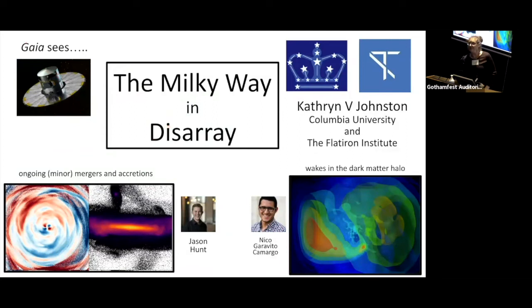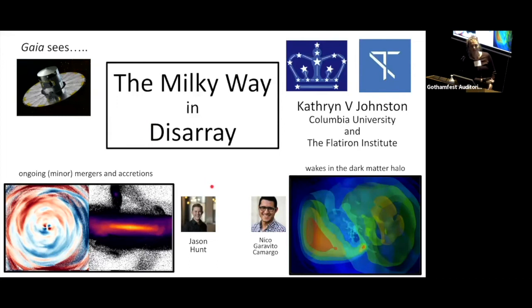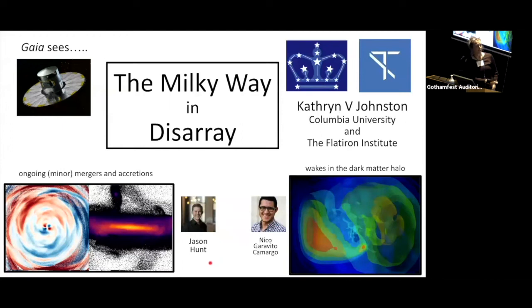For the last few years, Gaia has revealed that the Milky Way is somewhat in disarray. For decades we built careful models of the Milky Way in equilibrium, but Gaia has shown about 10% deviations from this — hardly a surprise since we know the Milky Way is bombarded by satellites. Rather than a problem, this is an opportunity to study some rather fun dynamical effects.